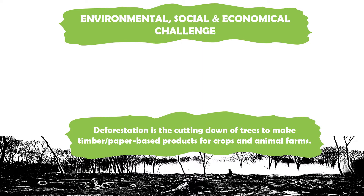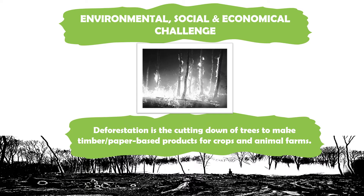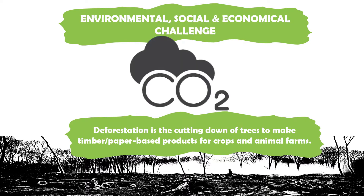The term slash and burn is the process of turning untouched forest into farmland. The trees are cut down and set alight. This leads to dense smoke which covers a large area and can be seen from space. A large amount of carbon is released through this process.